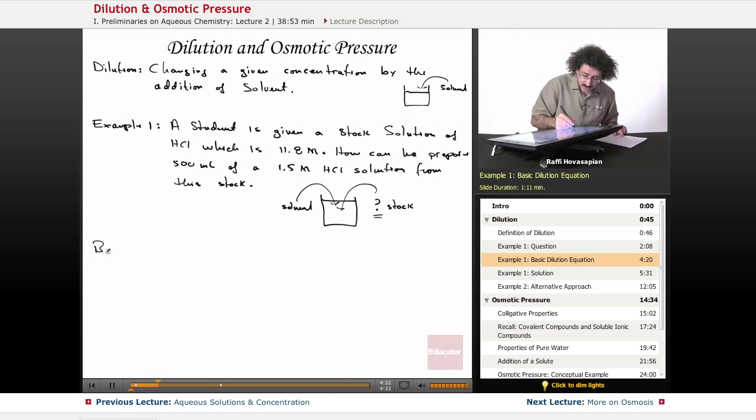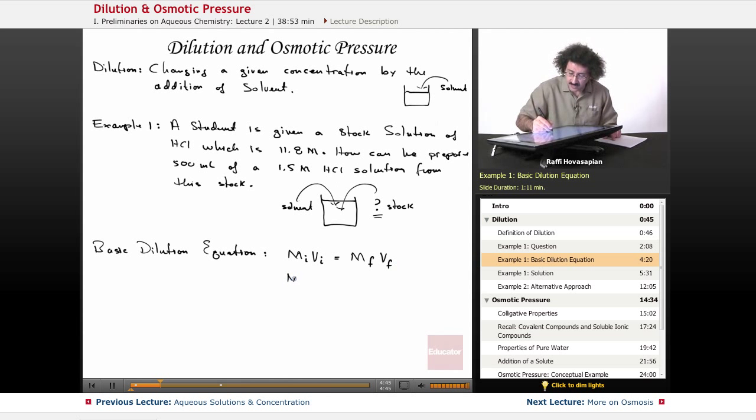The basic dilution equation says that the initial molarity times its initial volume equals its final molarity times its final volume. M1V1 equals M2V2. This M is molarity, not mass, very important. The molarity times the volume that we start off with, of the stock solution, once we've diluted it, the final molarity, the final volume. So this is the equation that we want to work with.